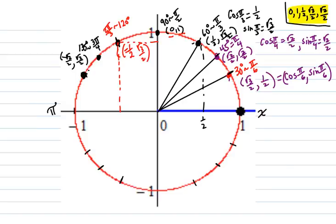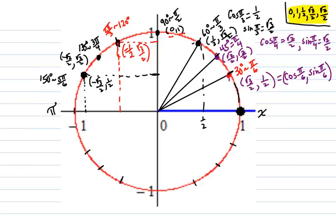Over this one: counting 1, 2, 3, 4, 5 — that's 5π/6, which is 30 degrees shy of 180, so a 150-degree angle coterminal to 5π/6. The coordinates: it's the long x side, so negative √3/2, comma, and the y is 1/2. So the cosine of 150 degrees is negative √3/2, and the sine of 150 degrees is 1/2.